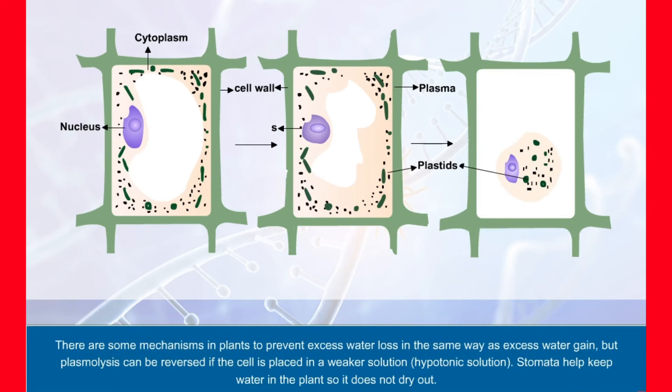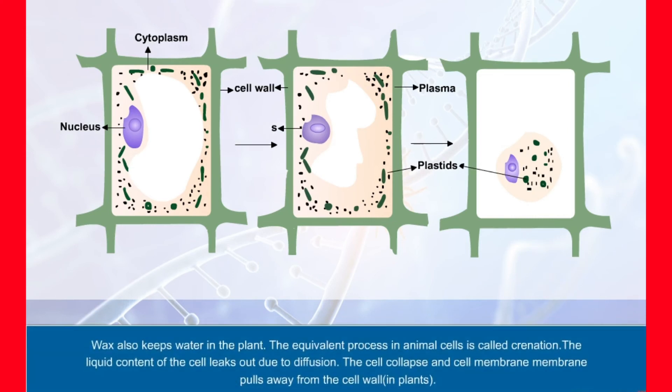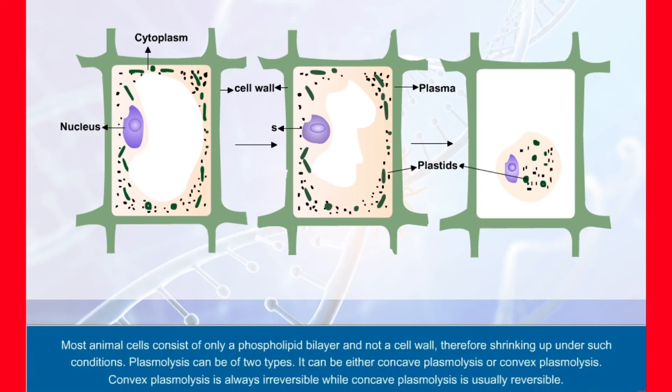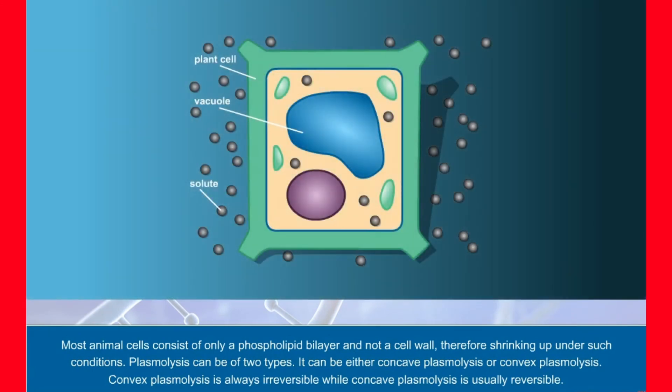But plasmolysis can be reversed if the cell is placed in a weaker solution, hypertonic solution. Stomata help keep water in the plant, so it does not dry out. Wax also keeps water in the plant. The equivalent process in animal cells is called crenation. The liquid content of the cell leaks out due to diffusion. The cell collapse and cell membrane pulls away from the cell wall in plants. Most animal cells consist of only a phospholipid bilayer and not a cell wall, therefore shrinking up under such conditions.